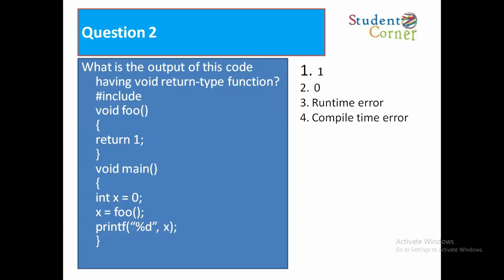Question number 2: What is the output of this code having void return type function? Hash include void foo, return 1, close. Void main, int x is equal to 0, x is equal to foo, printf percentage d x. Option 1 is equal to 1, 2 is equal to 0, 3 is equal to runtime error, option 4 compile time error. The answer is compile time error.